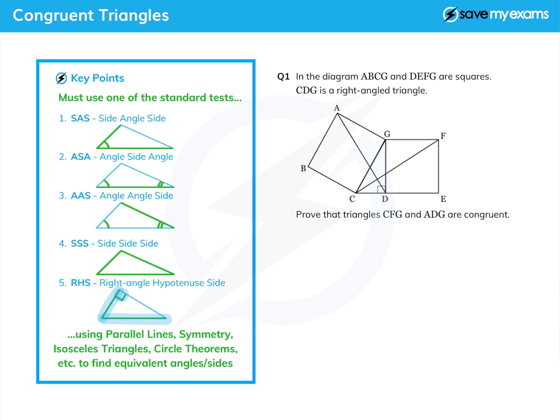If you have a right angle triangle and you can show that the hypotenuse and one of the other sides is the same in each triangle, then that's also a test for congruence.